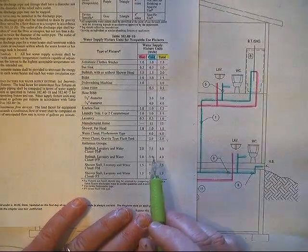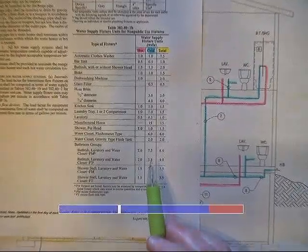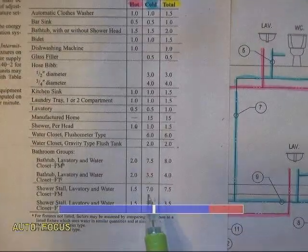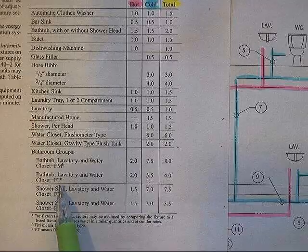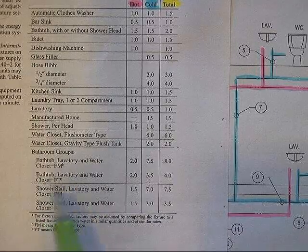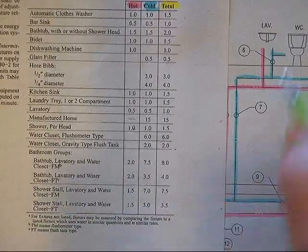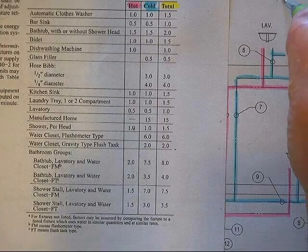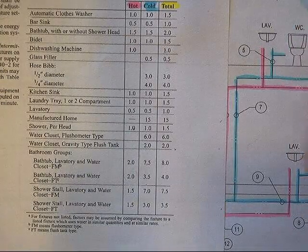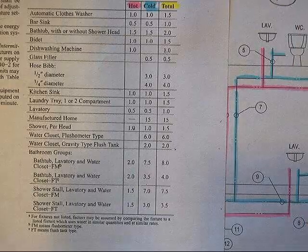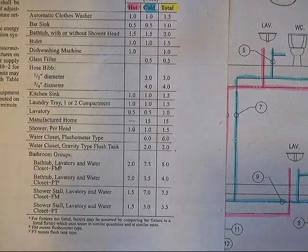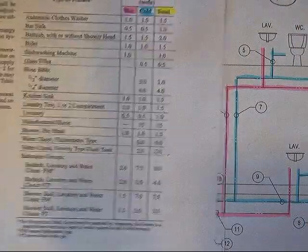The water closets in this project will be considered flush tank water closets. I move to my table and find out that the load for a flush tank water closet, a lavatory, and a bathtub, the total load is four. So I'm going to simply just write that down and designate the total load by simply circling it.